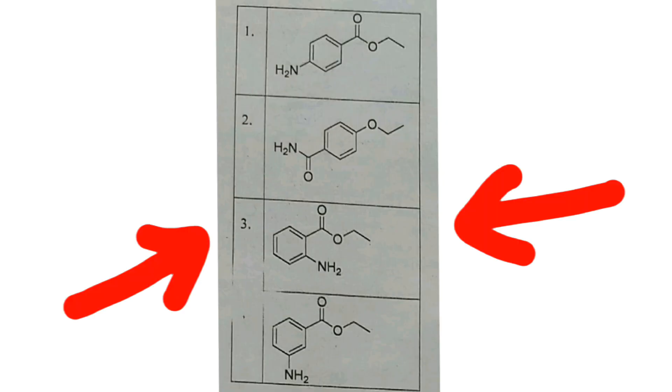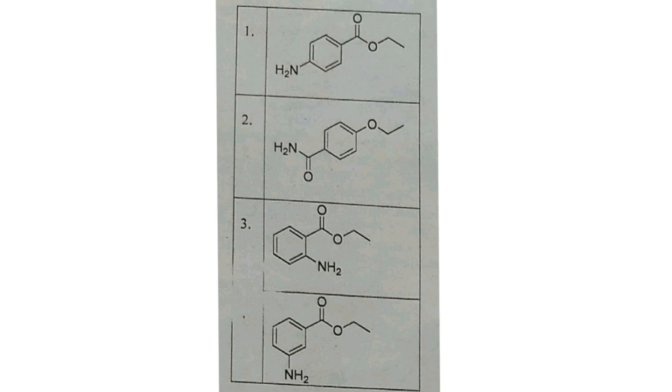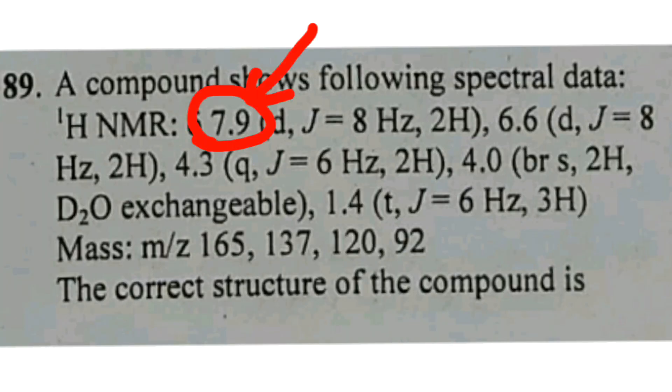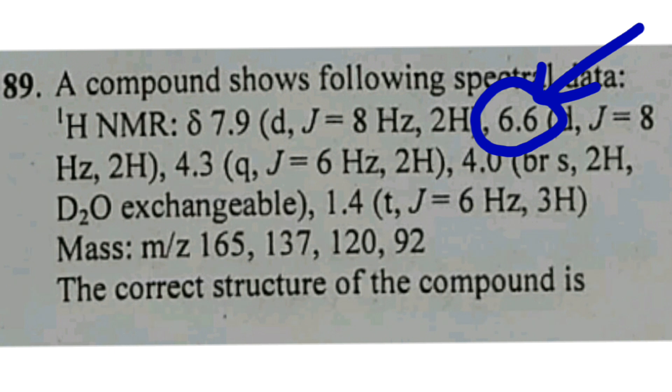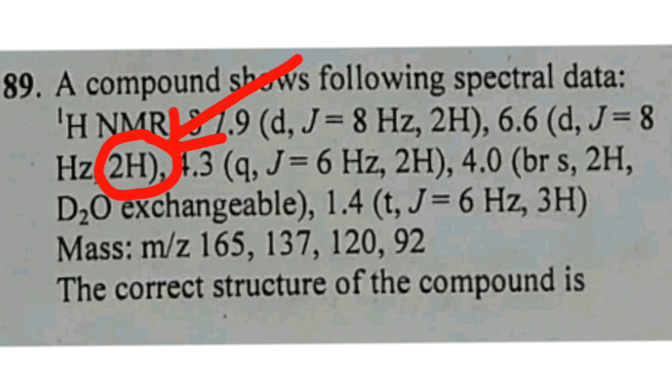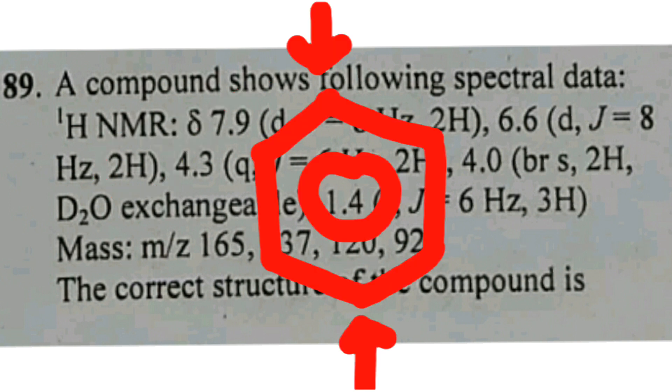these are the options. Looking at the NMR data: delta 7.9, doublet, J = 8 Hz for 2H, and delta 6.6, again a doublet with coupling constant 8 Hz for 2H. This suggests para substitution.